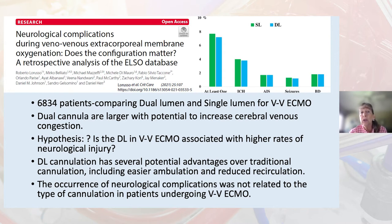The dual cannulation has several potential advantages over traditional cannulation, including easier ambulation and reduced recirculation, which is why many physicians choose to use it. The occurrence of neurological complications in this study was not related to the type of cannulation in patients undergoing VV ECMO. As seen in the chart, intracerebral hemorrhage, acute ischemic stroke, seizure, and brain death were nearly the same in both groups.